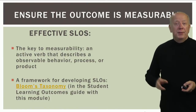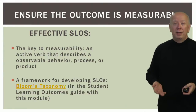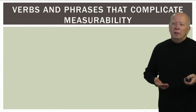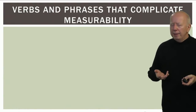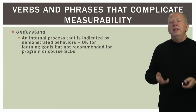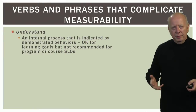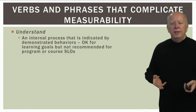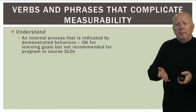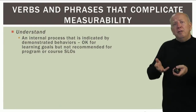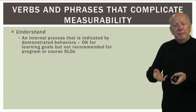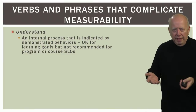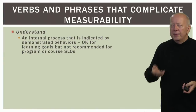In Bloom's Taxonomy, I provide tables in the guide with lists of recommended verbs. There are some verbs and phrases that seem okay but really complicate measurability. First: the word 'understand.' We all want students to understand things, but understanding is an internal process — it's only indicated when students do something to show you they understand. So write the outcome in measurable terms using verbs like describe, identify, explain, deliver, or present instead of 'understand.'